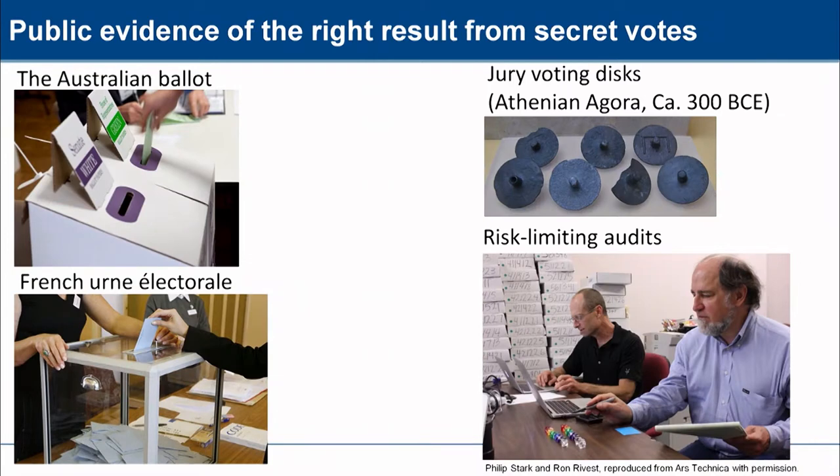This gave both vote privacy and the opportunity to watch the box into which all of the votes were being placed, so that we could have a public counting process afterwards. Not everybody uses the Australian ballot. The French have a different system with a glass urn and little envelopes. The ancient Athenians used little bronze discs, which they carefully dropped one at a time into a big voting urn — the bronze discs are very subtly different but you can't tell from a distance. And here in California, Philip Stark and Ron Rivest have pioneered statistical audits on a fraction of the paper evidence that give good statistical confidence without having to count all the votes. All of these systems have the same theme of giving a good public evidence trail while keeping individual votes private.